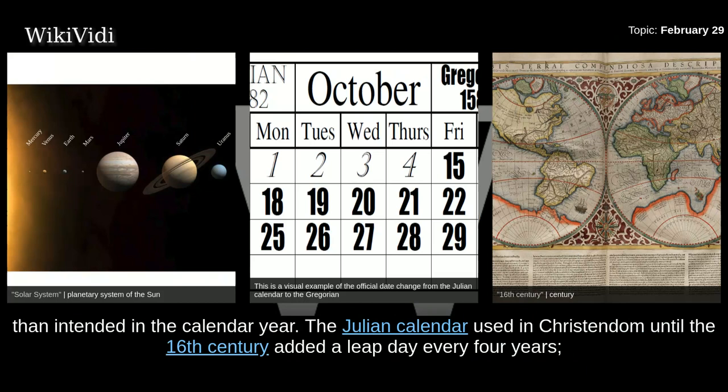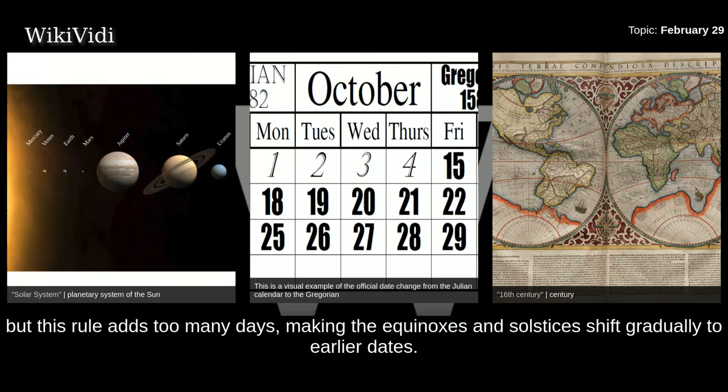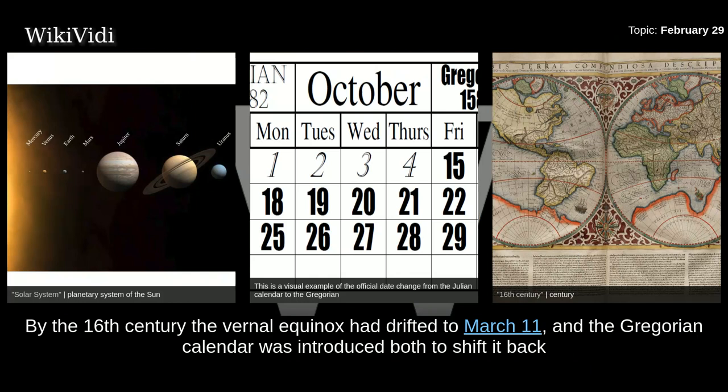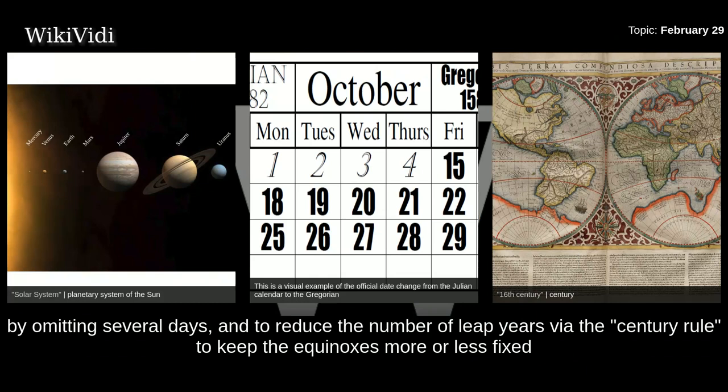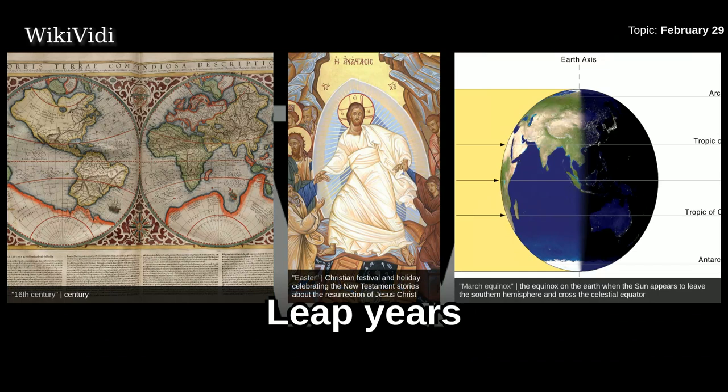Otherwise, seasons would occur later than intended in the calendar year. The Julian calendar, used in Christendom until the 16th century, added a Leap Day every four years. But this rule adds too many days, making the Equinoxes and Solstices shift gradually to earlier dates. By the 16th century, the vernal Equinox had drifted to March 11th, and the Gregorian calendar was introduced both to shift it back by omitting several days and to reduce the number of Leap Years via the century rule, to keep the Equinoxes more or less fixed and the date of Easter consistently close to the vernal Equinox.